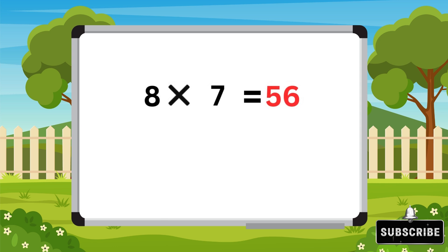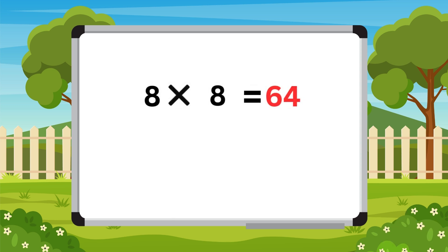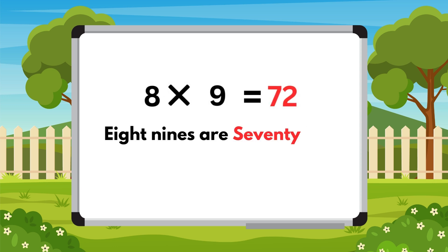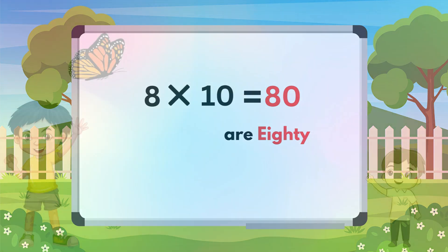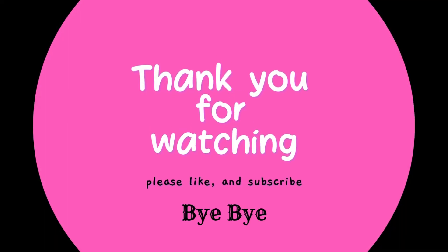Eight sevens are fifty-six. Eight eights are sixty-four. Eight nines are seventy-two. Eight tens are eighty. Thank you for watching. Please like and subscribe. Bye-bye.